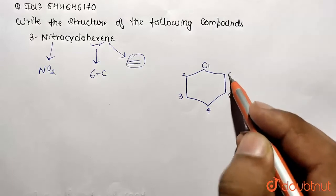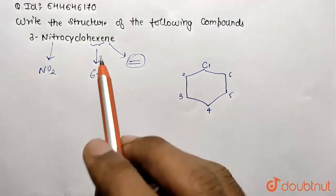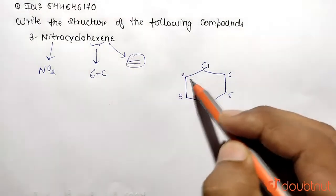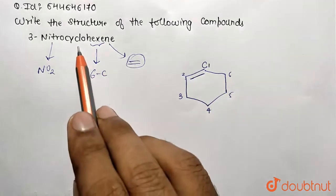The first carbon connects with a double bond to the second carbon. So this is our cyclohexene molecule.